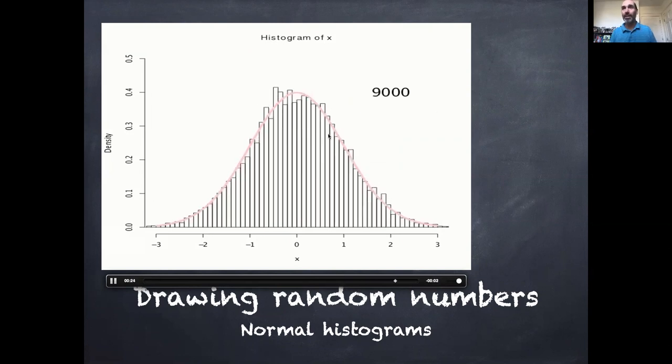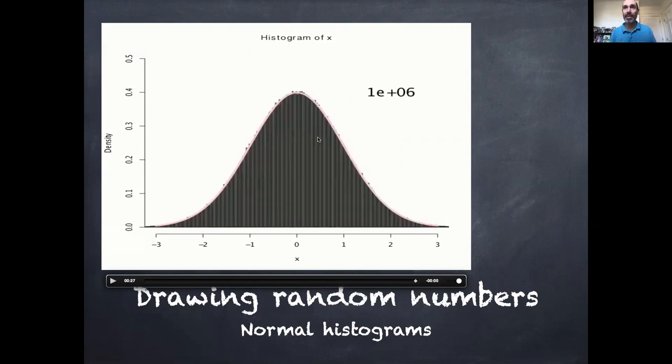So here again, we can use R to literally take thousands or millions of samples from a distribution. Here we took literally a million samples of individual numbers from the random normal distribution, and then I drew a histogram of those million random numbers, and it looks a whole lot like that probability distribution.